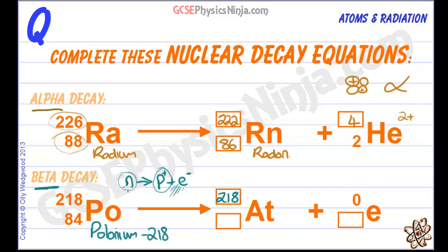I know we've lost the neutron that has become the proton, the extra proton. So that is now 85 and so we've changed the element and this has become a new element called astatine.